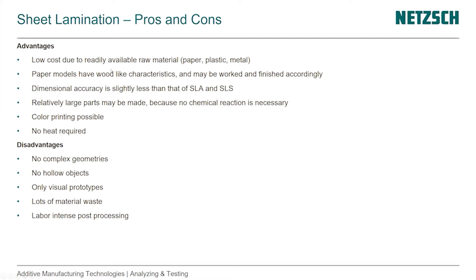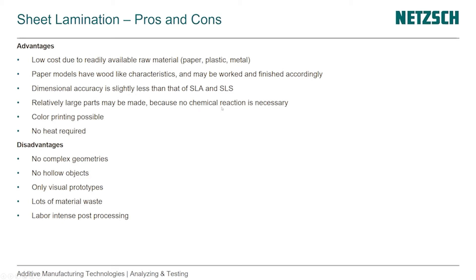Paper models create a wood-like structure. It looks like grain and it can also be worked and finished just like wood. The dimensional accuracy is slightly less than that of SLA and SLS. Relatively large parts can be made — super large — for furniture prototypes, prototypes of architectural components, one-to-one size.